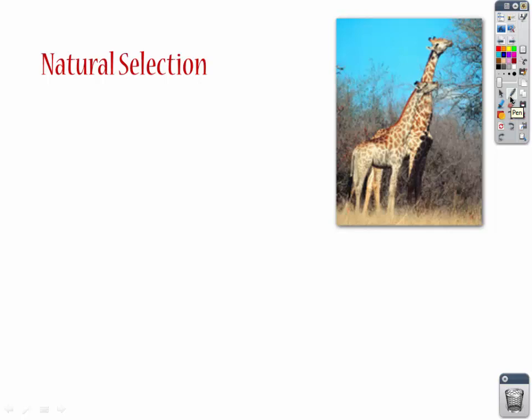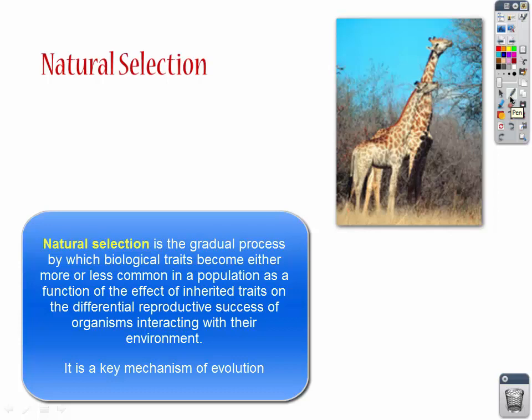Let's talk about a very important concept called natural selection. It's the idea that traits are carried on from generation to generation to help a species survive and reproduce. Natural selection is a process that occurs in three ways.